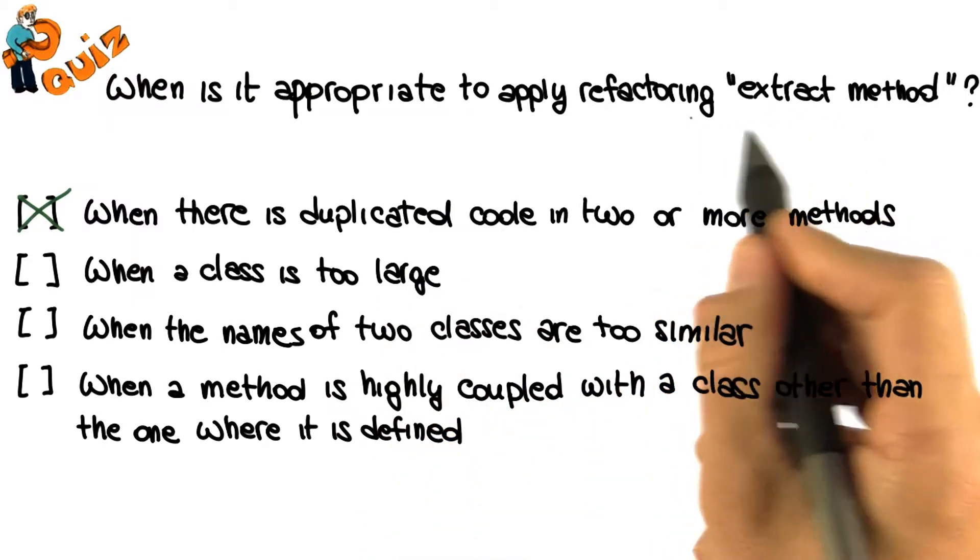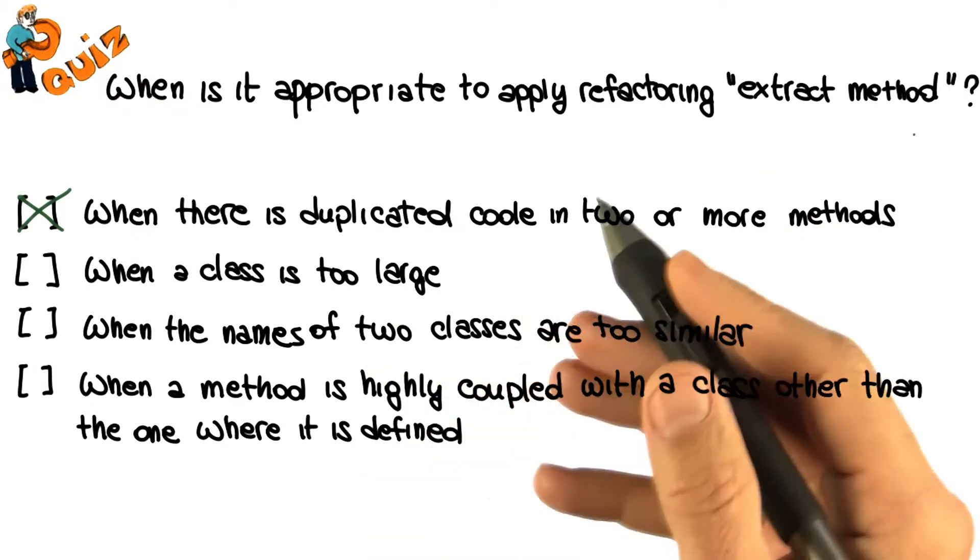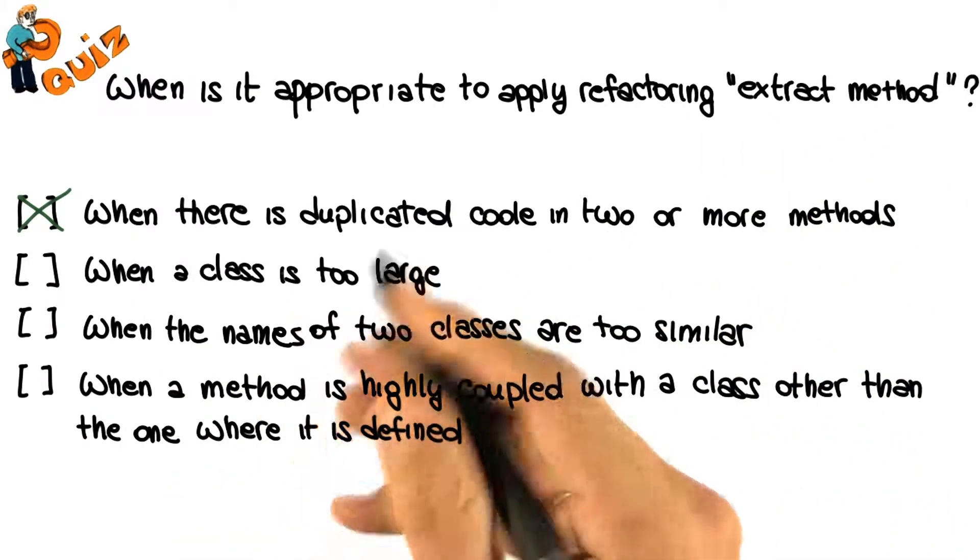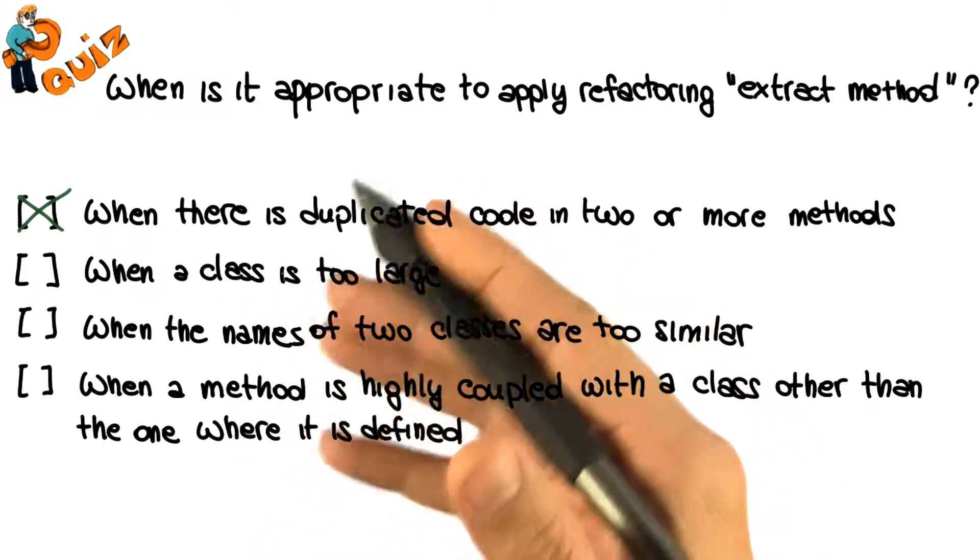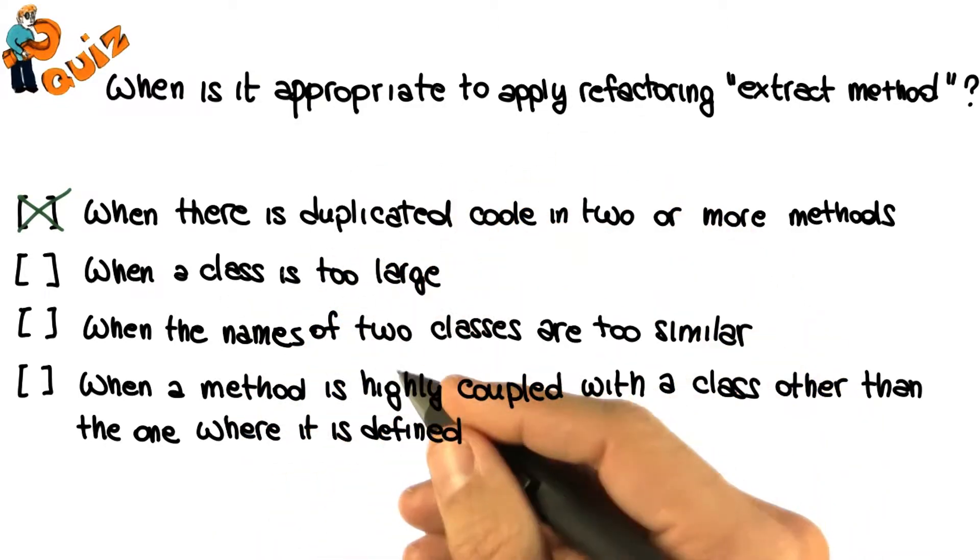When a class is too large, normally we don't want to apply the extract method. Instead, in these cases, it is usually more appropriate to use the extract class or extract subclass refactorings.